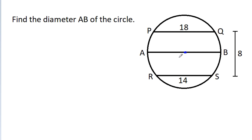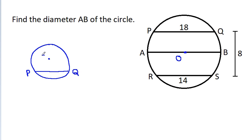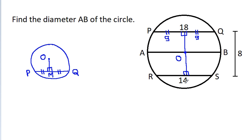Suppose O is the center of the circle. In any circle, if PQ is any chord and from the center O we draw a perpendicular, suppose OM, then PM will be equal to MQ. So if we draw a perpendicular on PQ and on RS, then since PQ is 18, these two halves will be 9. And since RS is 14, these two halves will be 7.